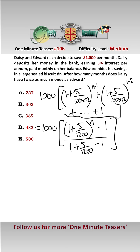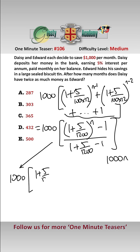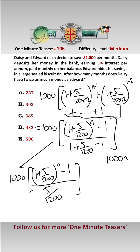Edward, on the other hand, has simply 1,000 times n savings because he puts it in a biscuit tin. So we want to know when Daisy's total — 1,000 times [(1 + 5/1200) to the n minus 1] over [5/1200] — is greater than twice what Edward has.